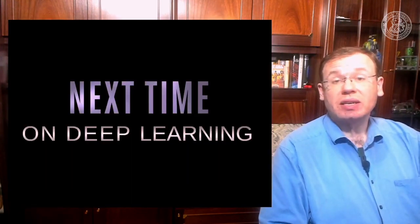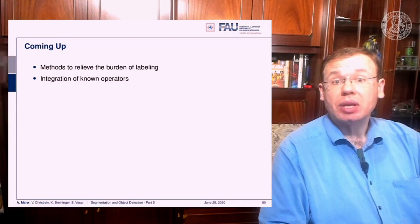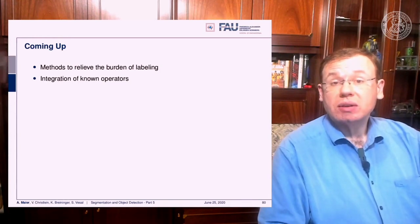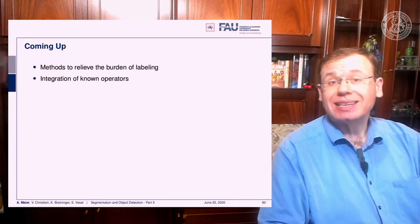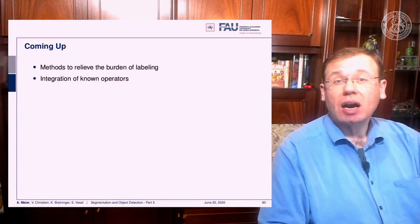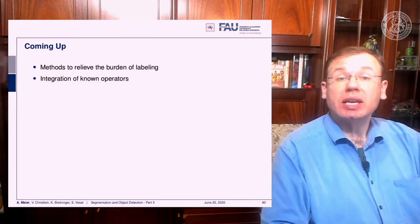Coming up very soon are methods to relieve the burden of labeling. We will talk about weak annotation, how we can generate labels, which leads to the concept of self-supervision — a very popular topic right now, heavily used to generate better networks and to reuse sparsely or even completely unlabeled data. We will also look at more advanced methods, including the use of known operators, how we can integrate knowledge into networks, and ideas for making parts of networks reusable.